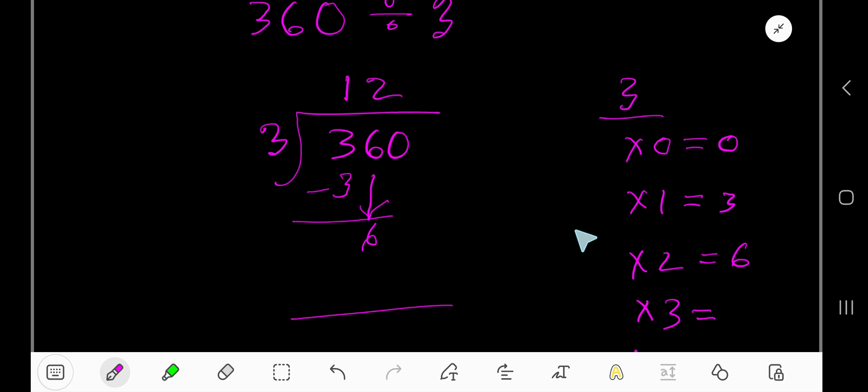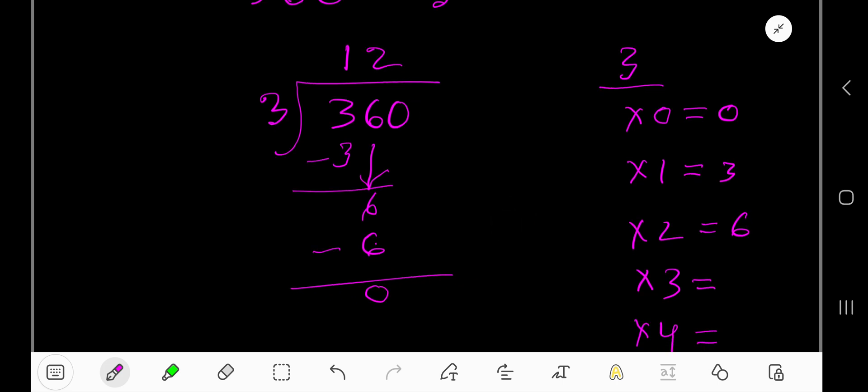2. Then 2 times 3. That gives us 6. If you subtract, you will get 0. Now bring down this 0.